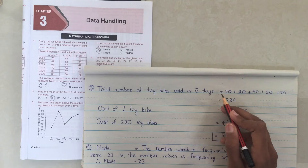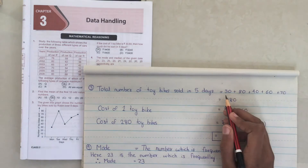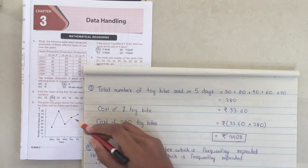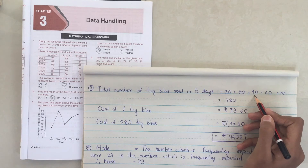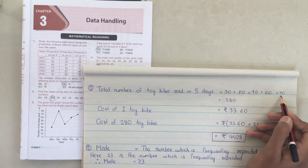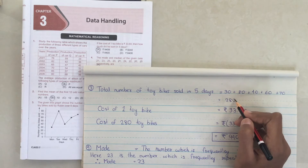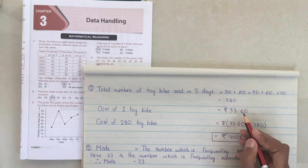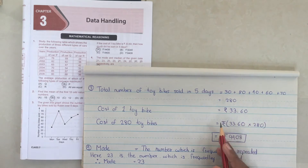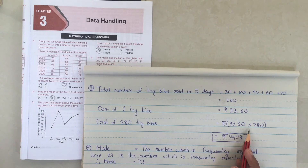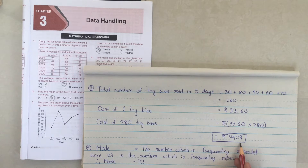The total number of toy bikes sold in 5 days: 30 on Monday, 80 on Tuesday, 40 on Wednesday, 60 on Thursday, and 70 on Friday. When we add, we get 280. Given that the cost of one toy bike is 33.60 rupees, the cost of 280 toy bikes would be 33.60 × 280, which is equal to 9,408 rupees.